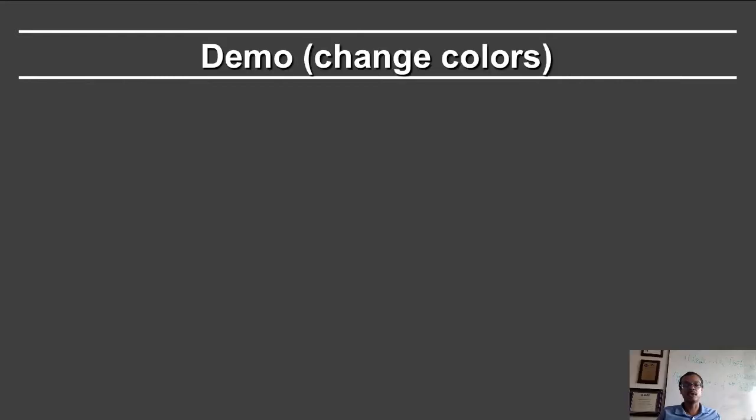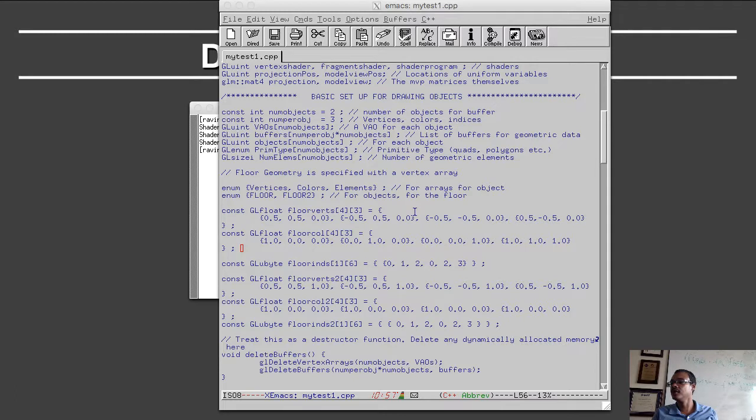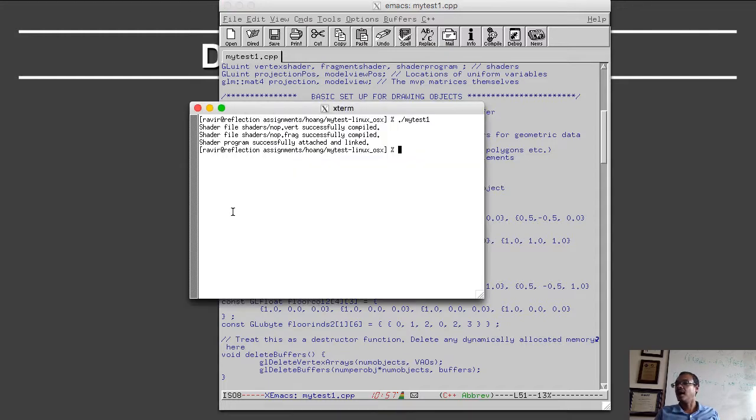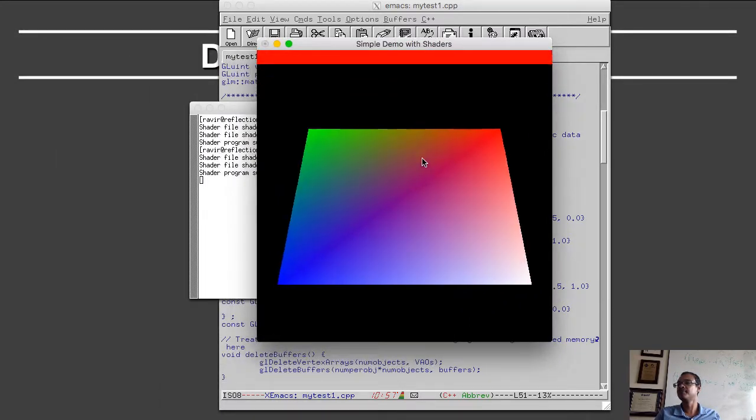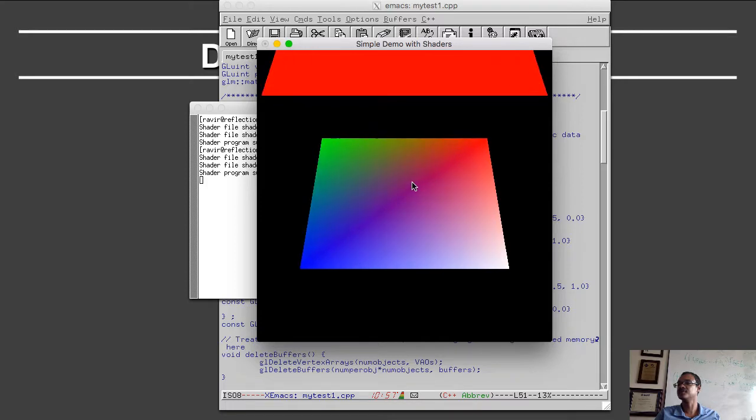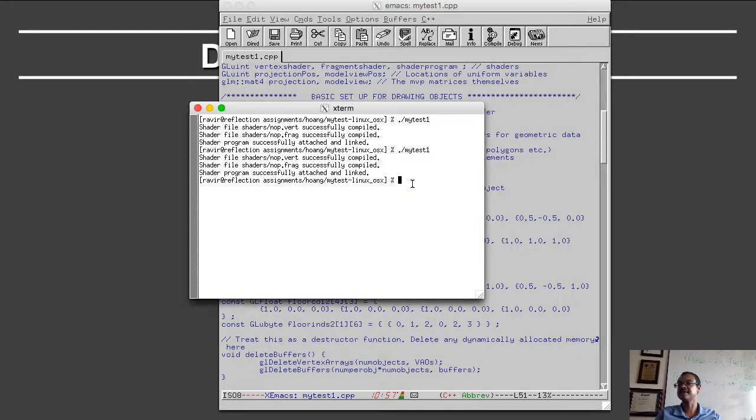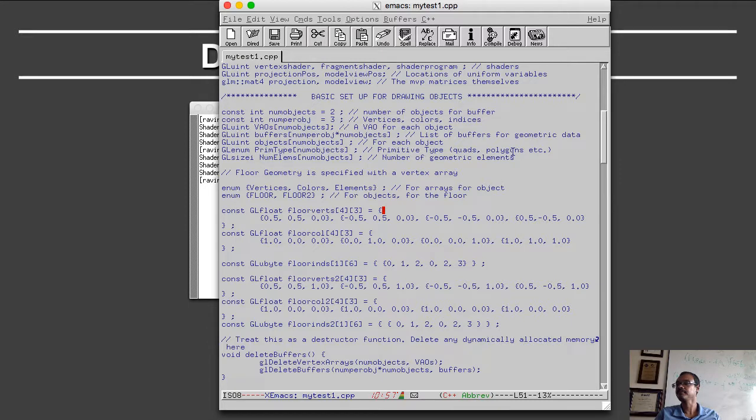I will now demonstrate the program. Here, I'm showing you the actual text for the program. You can download this, of course. It is the MyTest sequence of demos, and this is MyTest1.cpp. I can even run the program here. Let me show it to you. This is what you saw earlier. You have these two planes. I can zoom in, I can zoom out, and I can hit escape or quit to quit.